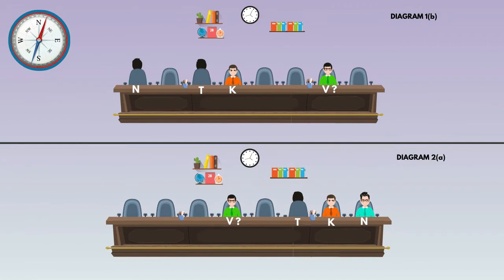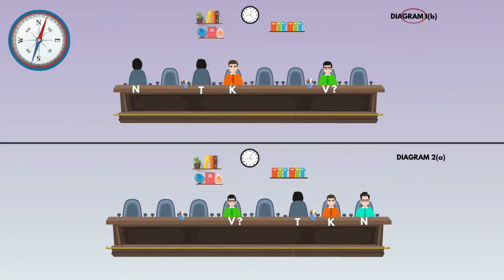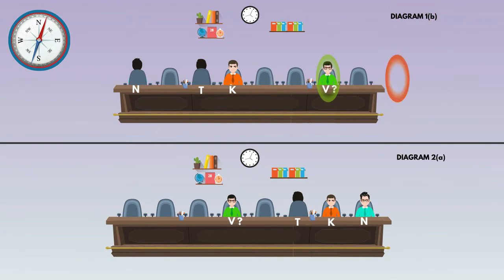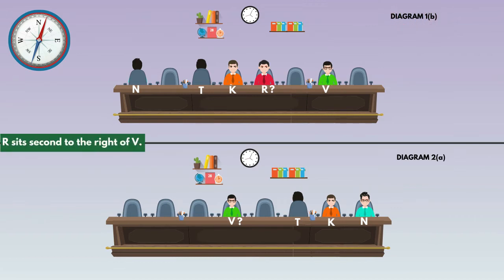Go to the next statement: R sits second to the right of V. In diagram 1B, V sits here, so we place R at the second position to the right. We can't place R beyond the row, so place R here only. V faces south direction because R sits second to the right of V.